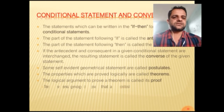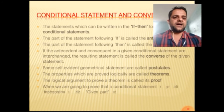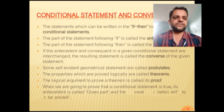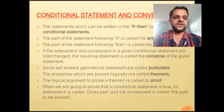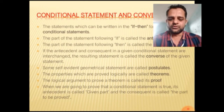When we prove that a conditional statement is true, its antecedent is called the given part, and the consequent is called the part to be proved.